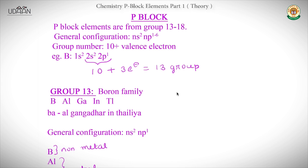P-Block elements are from group 13 to group 18. They are called P-Block elements because it is the last electron which enters the P-shell.